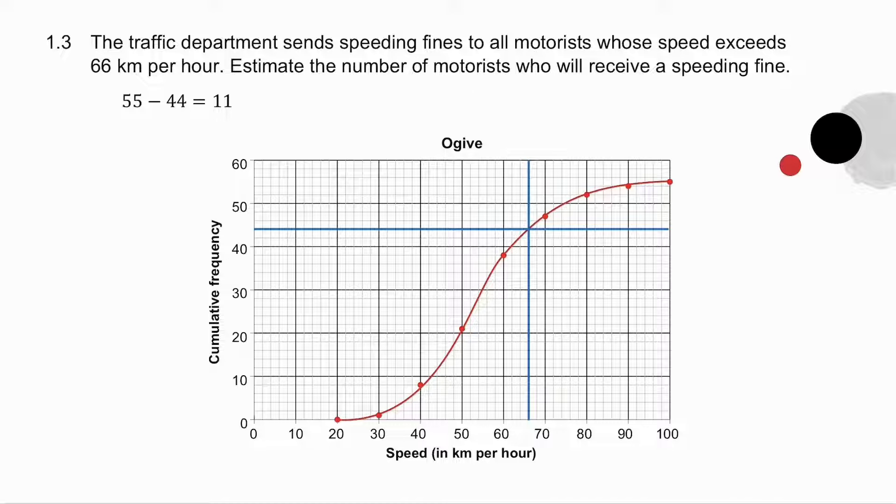Question 1.3 says they're going to give fines to any motorist whose speed exceeds 66 kilometers per hour. So what I do on my ogive is I go up from 66 kilometers per hour and I go across. How many motorists do I get? 44. But they talk about the speed exceeding that. In other words, it's the motorists who are going faster than 66 kilometers per hour. There are 55 motorists in total, 44 going at a speed of 66. In other words, how many are going more than that? There are 11 motorists.